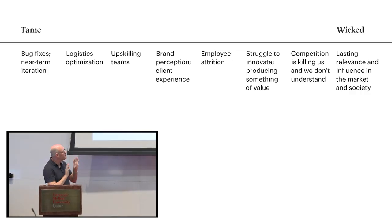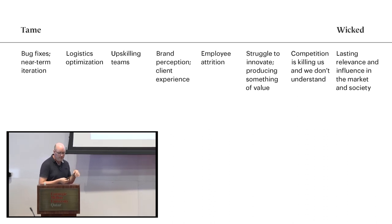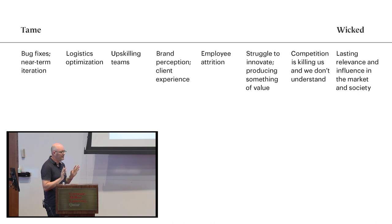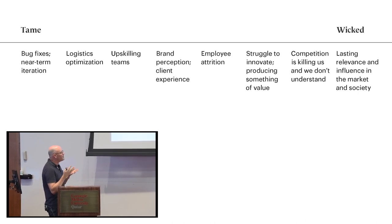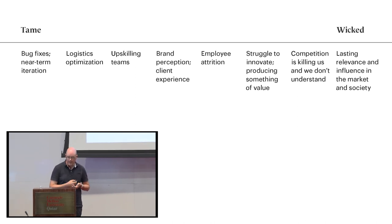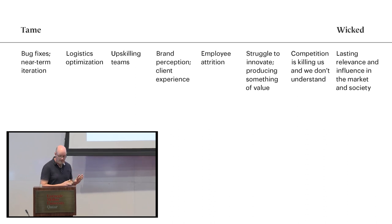I put together a spectrum. In business, you have tame problems — ones that are easily contained — and then you have wicked problems. Tame problems are very linear: things like bug fixes or near-term iteration where you know exactly where to go next. Logistics optimization — there are playbooks for that. Upskilling teams gets a bit more complicated. Brand perception and client experience is getting more complex because there's a social dimension to that. But we have methods to design for that; we've been doing it for years. That stuff is more easily managed.